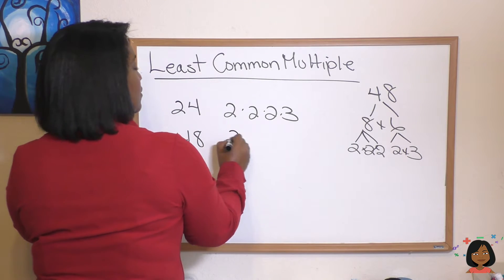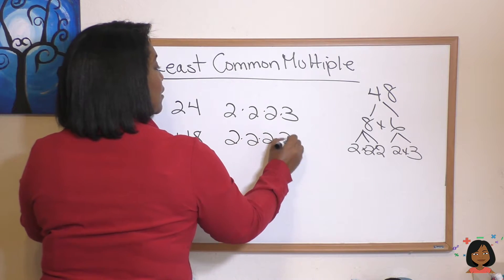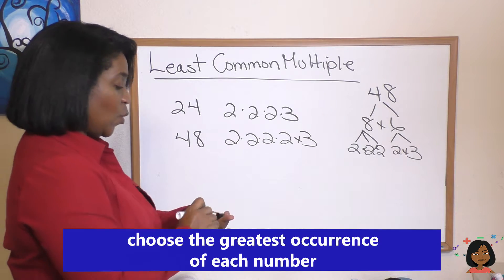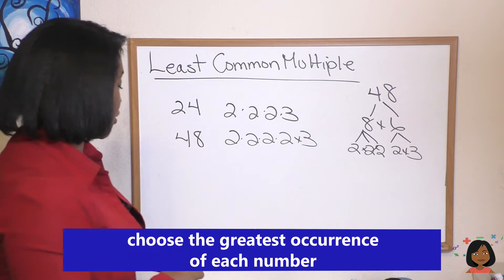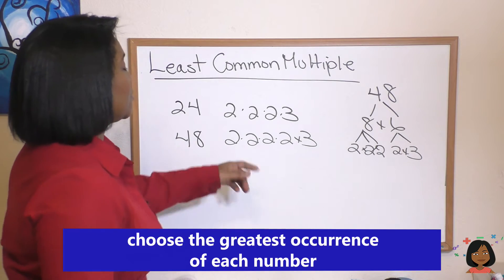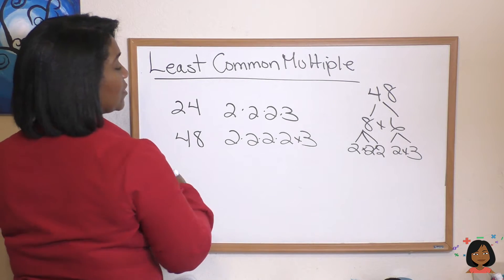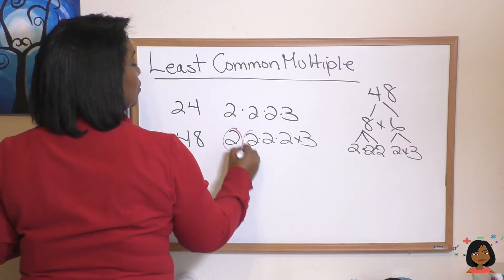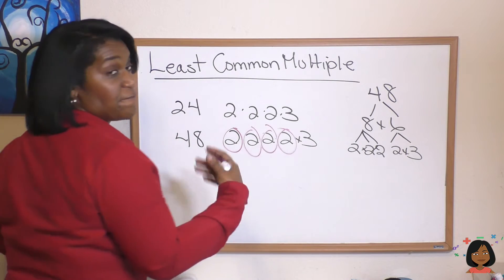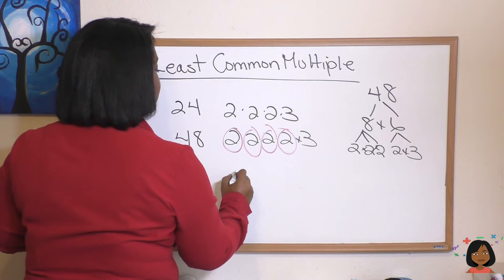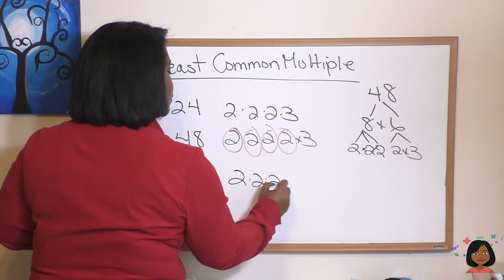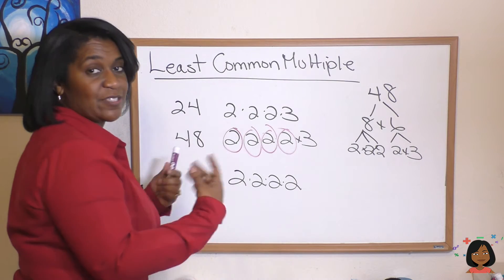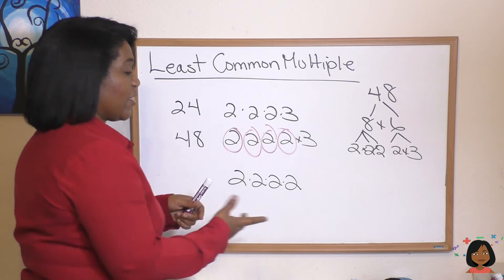Now to factor, we choose the greatest occurrence of each number. So we look for—let's start with twos—what's the most twos that we have? We have two, two, two, and two, so we have four twos. Let's write that down. And we have—what's the greatest occurrence of three in one of the numbers? It's just one three, and this number is our least common multiple of twenty-four and forty-eight.